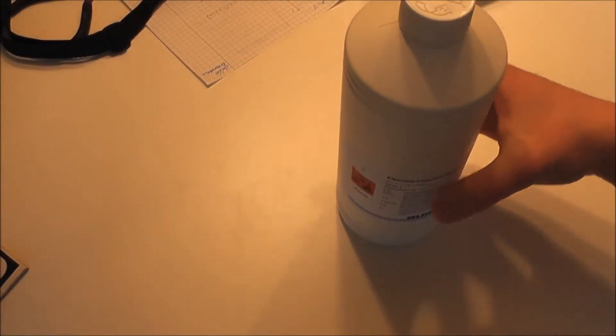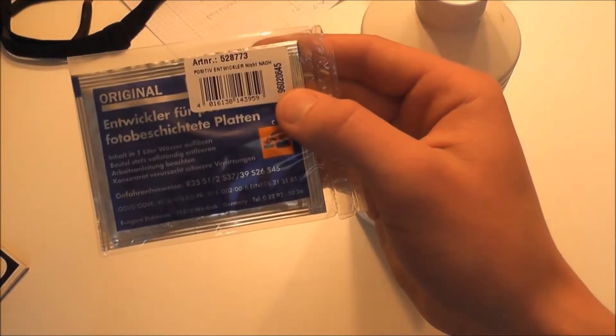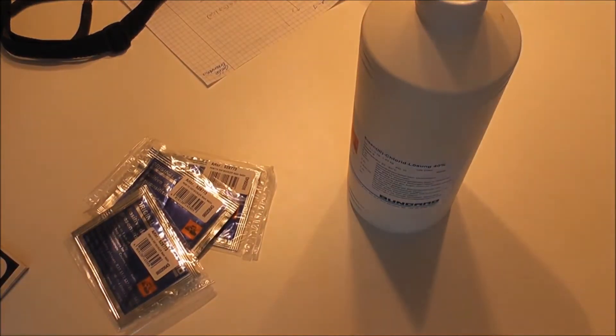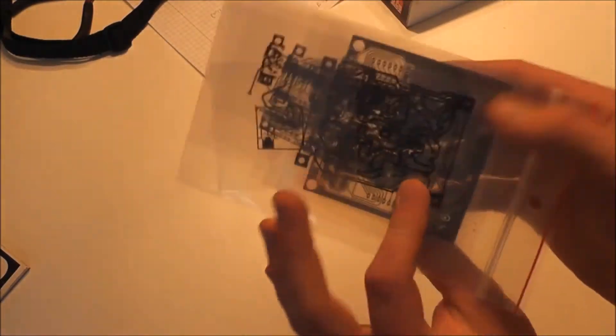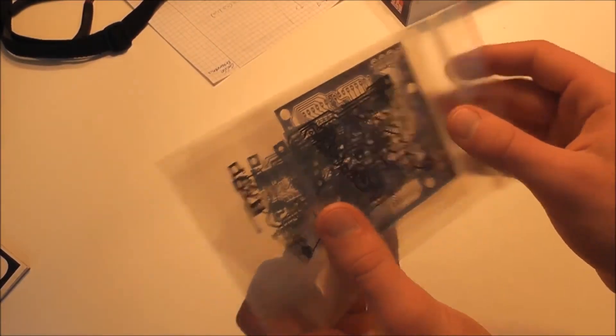For chemicals, you'll need ferric chloride and developer for photosensitive circuit boards, along with something to weigh your ingredients. You'll also need the circuit you want to make printed in black and white on transparent foil.